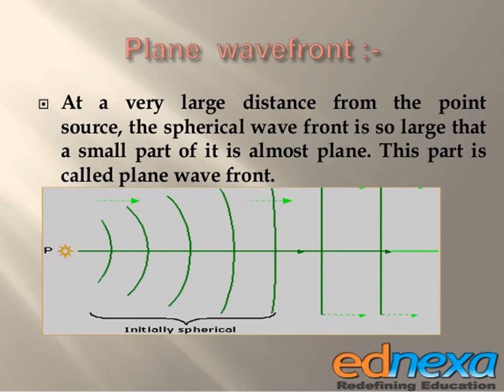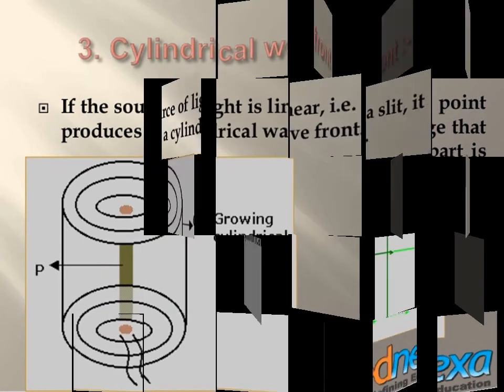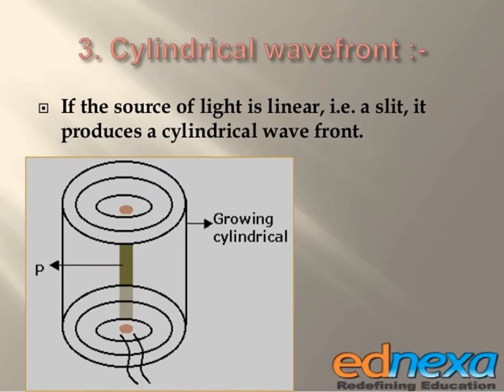When the spherical wavefront travels forward, it will become a plane wavefront. For a cylindrical wavefront, if the source of light is linear, i.e. a slit, it produces a cylindrical wavefront. The linear source produces a cylindrical wavefront.